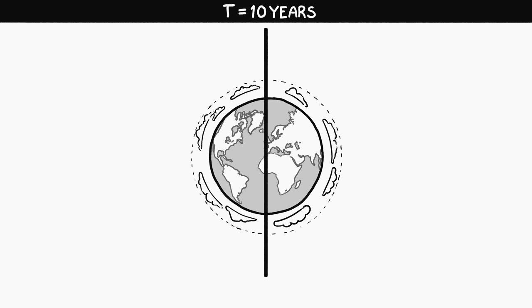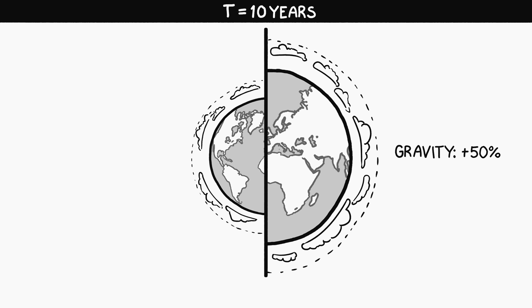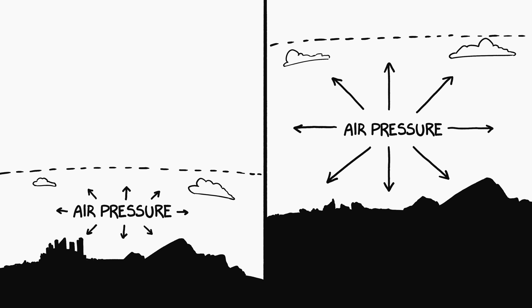After 10 years, gravity would be 50 percent stronger. We'll assume the atmosphere is expanding too. Otherwise, there wouldn't be enough to cover the growing earth, and the air would by now be getting too thin to breathe. With an expanding atmosphere, surface air pressure would rise due to both increased gravity and more air, but we'd be okay for a little while longer.